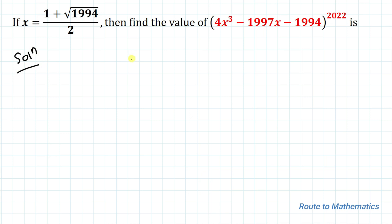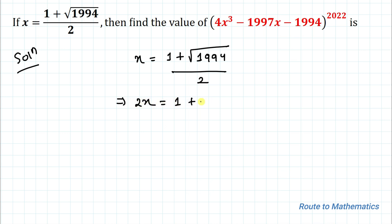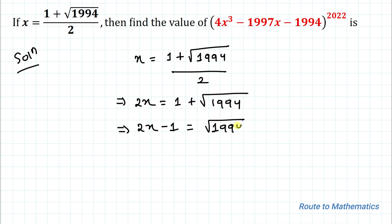We have given x equals to 1 plus root under 1994, divided by 2. In the first step, I'll try to remove this root. For that, let's do cross multiplication: 2x equals 1 plus root under 1994. Taking 1 to the left hand side: 2x minus 1 equals root under 1994. Now squaring both sides, we have (2x minus 1)² equals 1994.